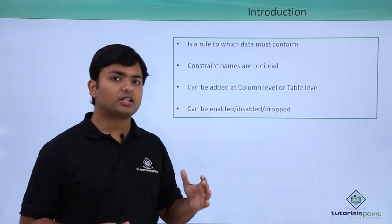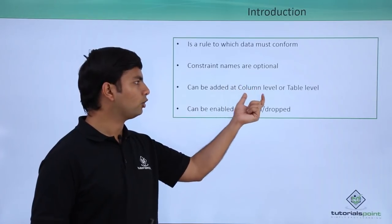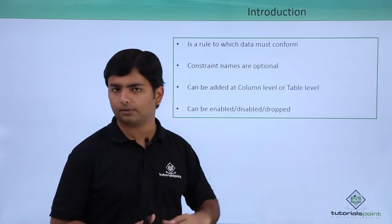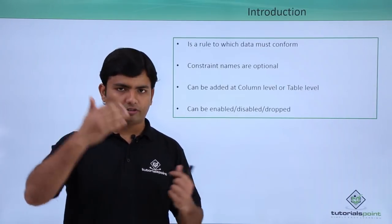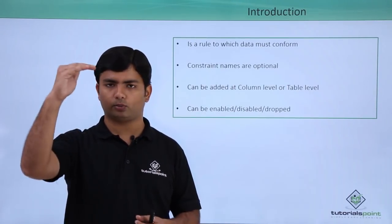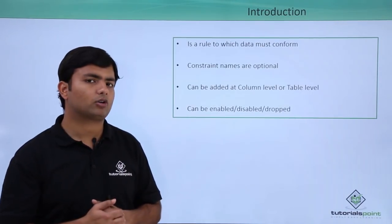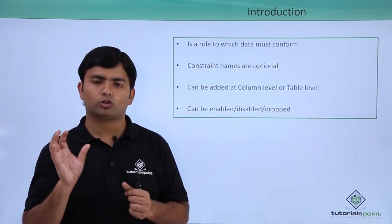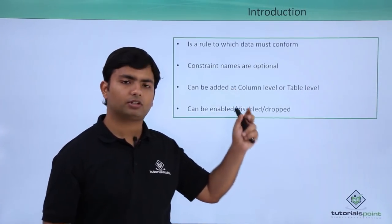Now, while adding, either you can add a particular constraint at column level or at table level. Basically, when we create a table, we have already seen how we can create like we will specify each and every column name separately. While defining a column, only if you want to pass the constraint description, it will be a column level constraint.